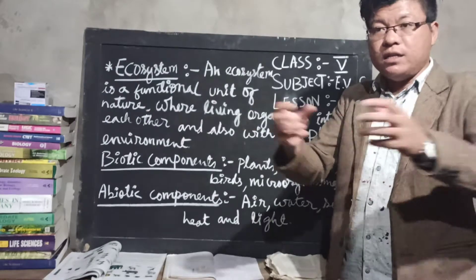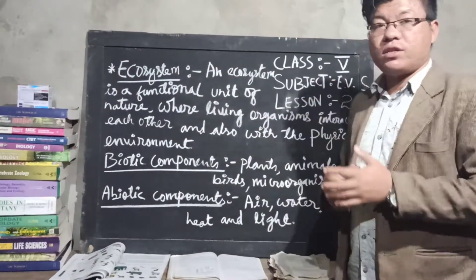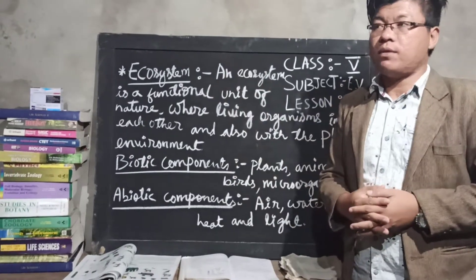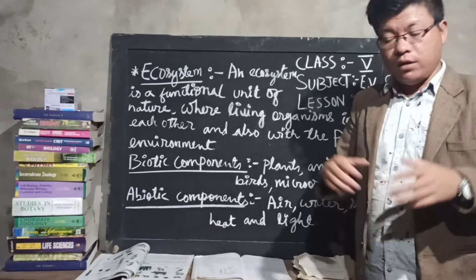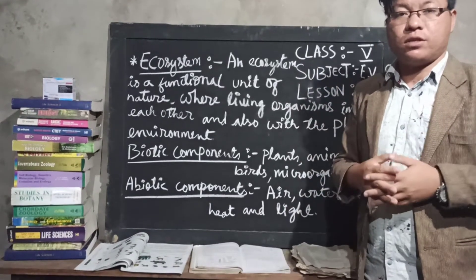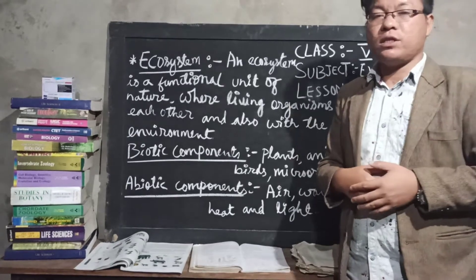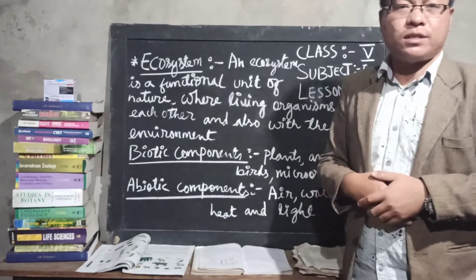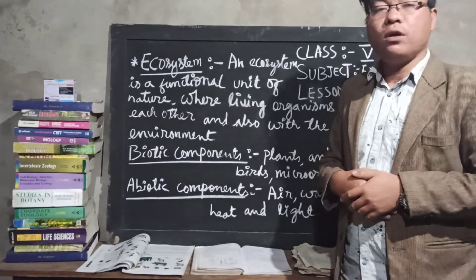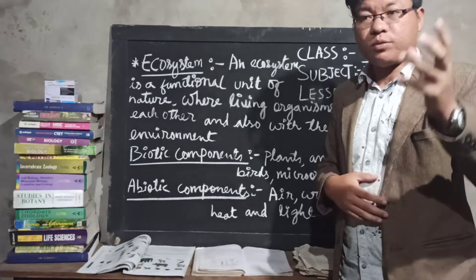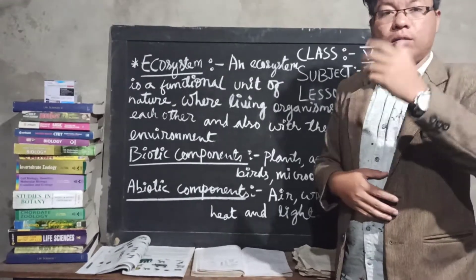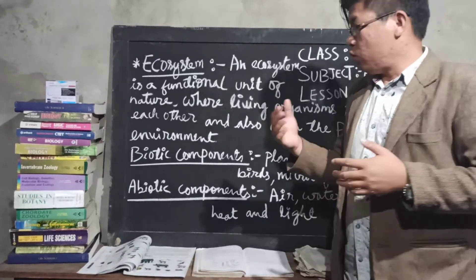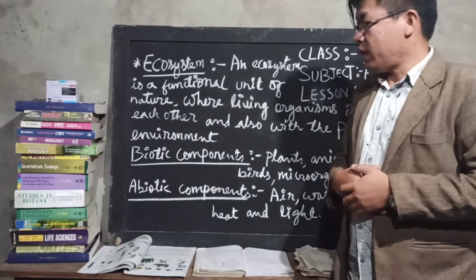In order to have one complete ecosystem, you have to have first of all the producers. Producers are also known as autotrophs. In simple terms, I will explain to you: 'auto' means self and 'trophs' means production — self-production. Examples of autotrophs are like green plants.